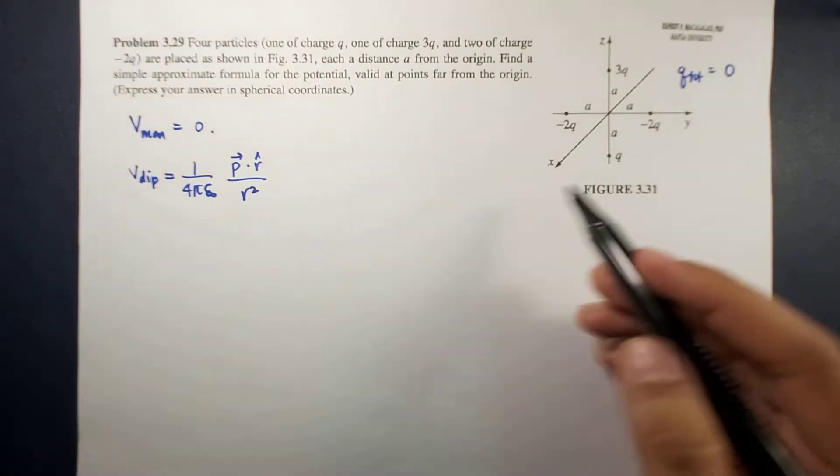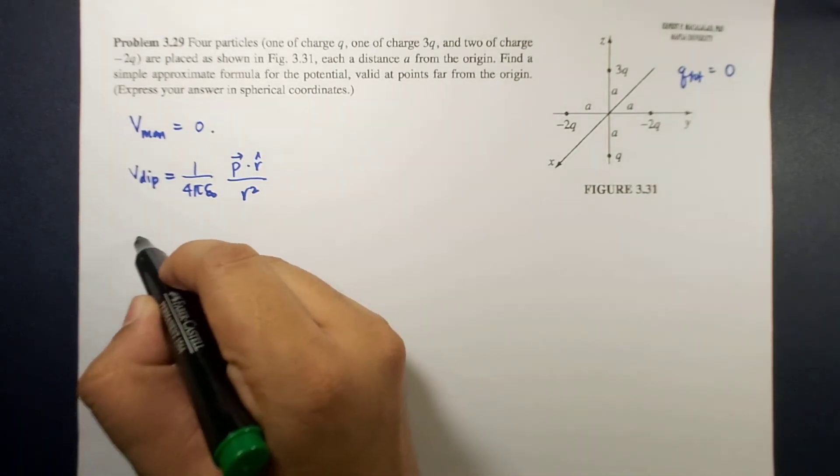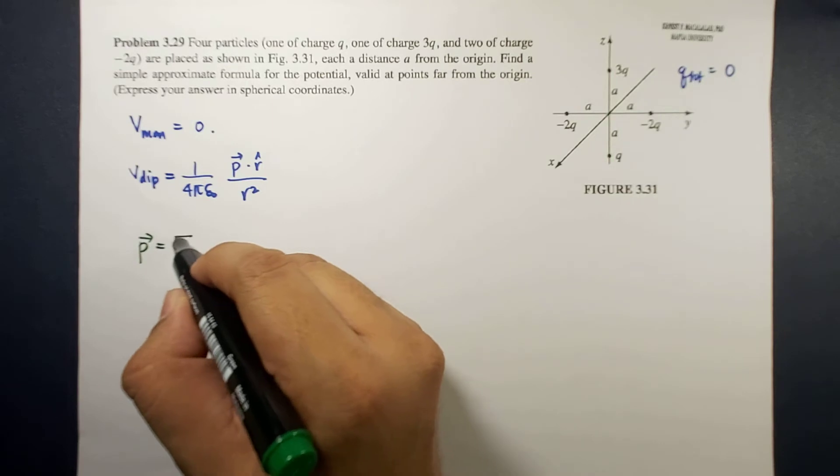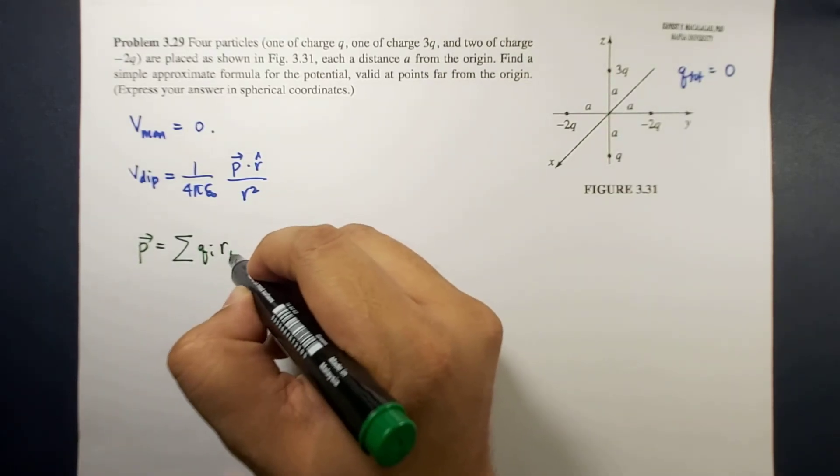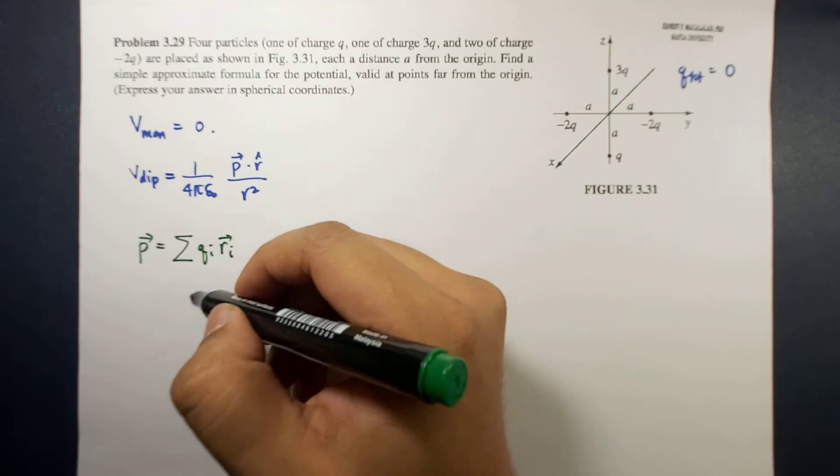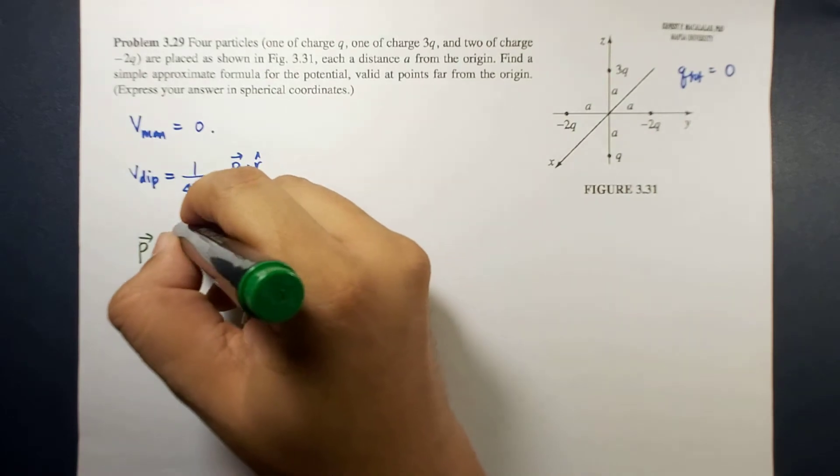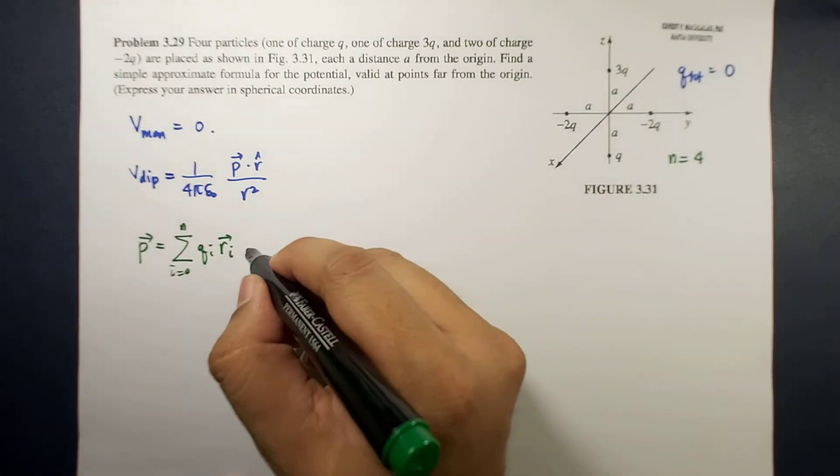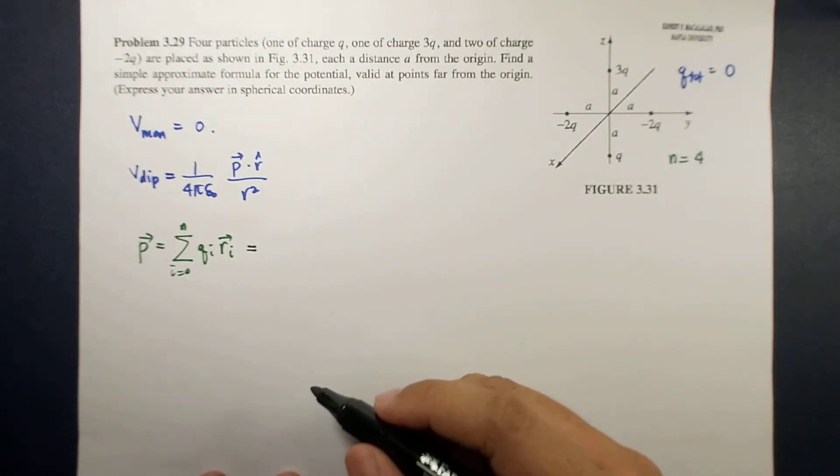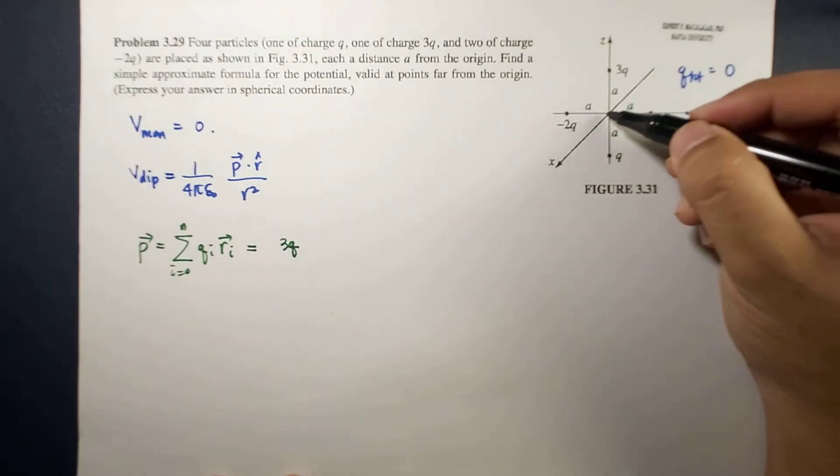Because this is a discrete distribution, we can rewrite p for discrete to be equal to sum of q_i r_i where i equals 0 to n. In this case our n is 4. If we expand this, we have the following: for 3q we have 3q times a z hat.